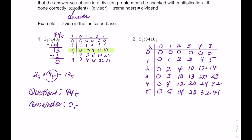Now using this base 6 table for division with divisor 5: looking at the row for 5, find which multiple gets close to 34 base 6. Since 5 times 4 gives 32 base 6, that's the closest value without exceeding 34.